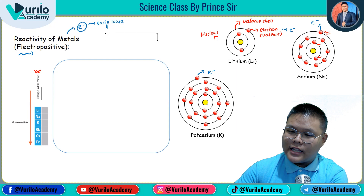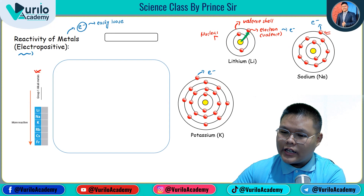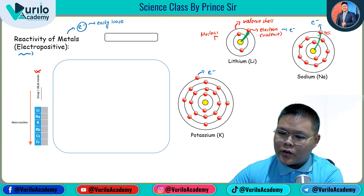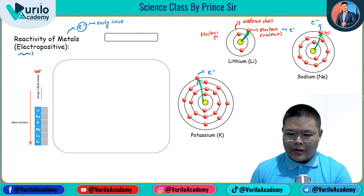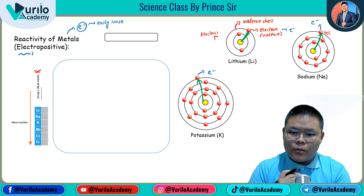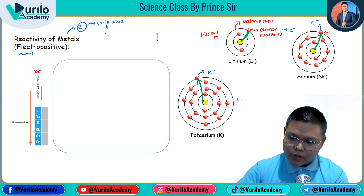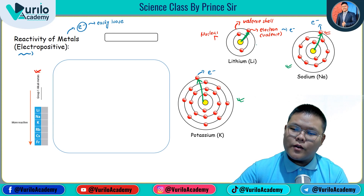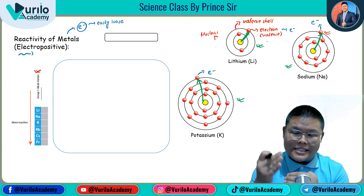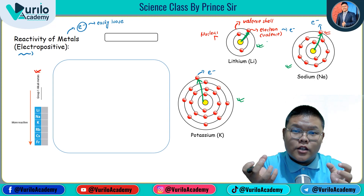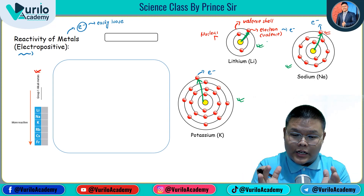Now we need to look at the distance from the nucleus to the valence electron. In green color, we can see this distance. For sodium, the distance is a bit more, and for potassium the distance is even greater. So as we go down — potassium has the greatest distance, sodium is in the middle, and lithium has the smallest distance from nucleus to valence electron.